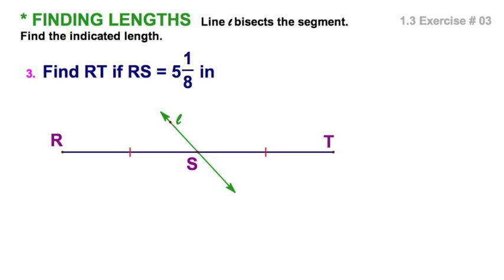These are simple exercises just designed to see if we can understand our definitions. This green line bisects the segment RT. By definition, that means that it passes through a point, which is the midpoint, dividing the segment into two congruent segments. Now, if RS is 5 and 1/8, we're talking about this segment right here, the half segment. And we're asked to find RT. And, obviously, all we're going to do is double it.